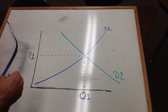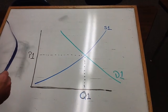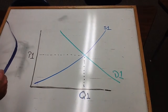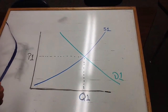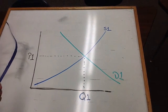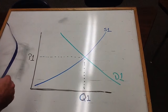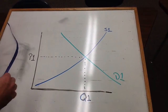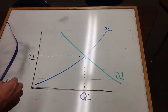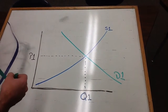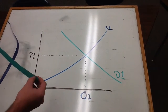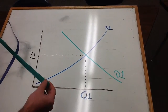So we start with our supply and demand graph and we're going to shift them. In this case, we're going to shift them both to the left. We're going to decrease both supply and demand, and it should help us make our point.